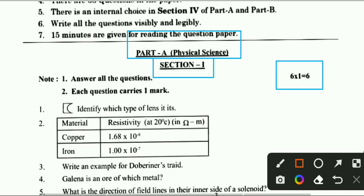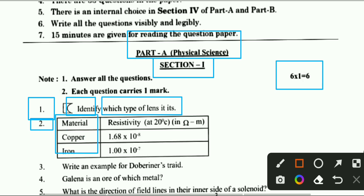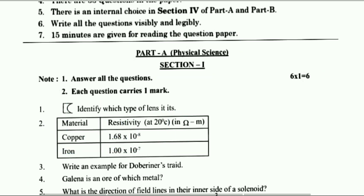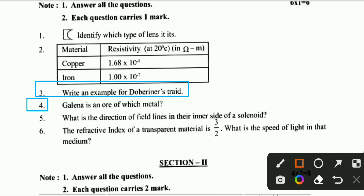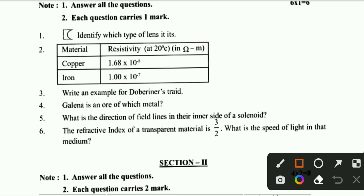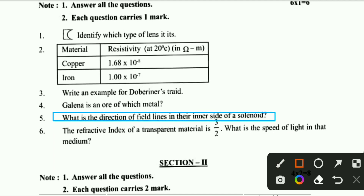Section 1 carries 6 marks. The first question asks: what type of lens is it? The second question is about material and resistivity. The third question says: write an example for dominant trait. The fourth question asks: galena is an ore of which metal? The fifth question asks: what is the direction of field lines on the inner side of a solenoid?